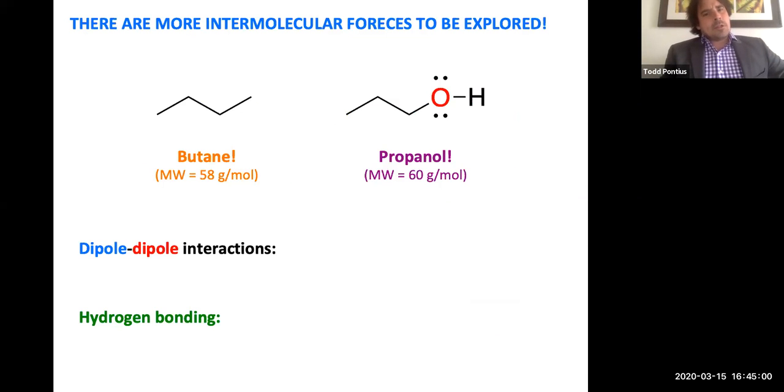To do this, let's look at two different molecules. In one corner, we have butane. In another corner, propanol, very similar molecular weights and very similar in general shapes. So we would predict that they would have pretty similar intermolecular forces, in terms of their London dispersion forces.